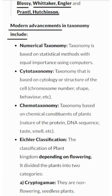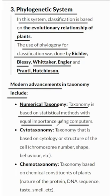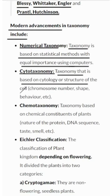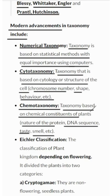In the modern era, taxonomy has advanced significantly. Numerical taxonomy uses computers and statistical methods to classify plants — like having a super-smart assistant to organize your plant collection. Cytotaxonomy classifies plants based on the structure of their cells, such as chromosome number, shape, and behavior — using a plant's cellular fingerprint to identify it. Chemotaxonomy classifies plants based on their chemical makeup, considering proteins, DNA sequences, taste, smell, and more — distinguishing plants by their unique chemical signatures.